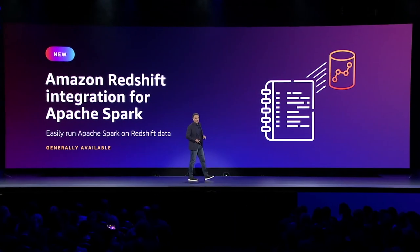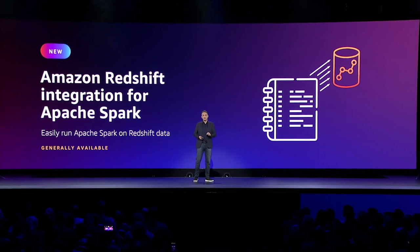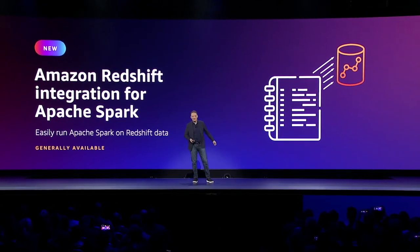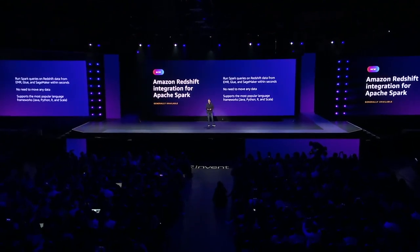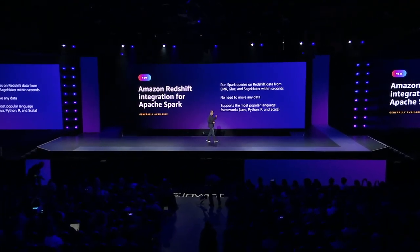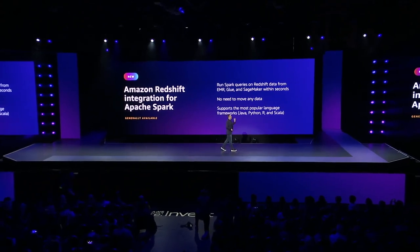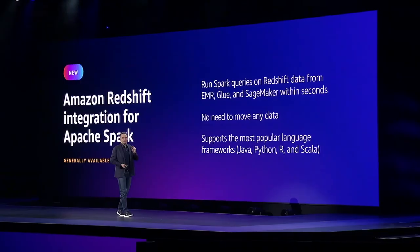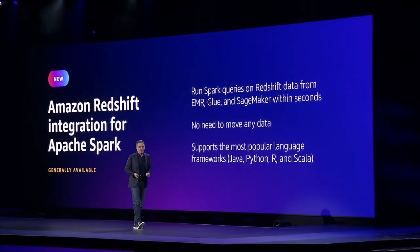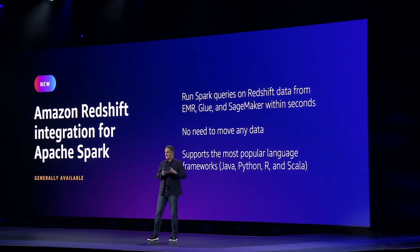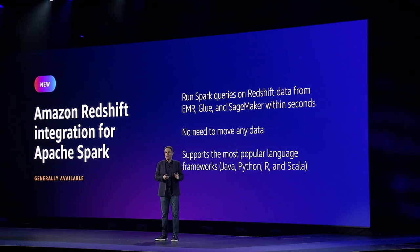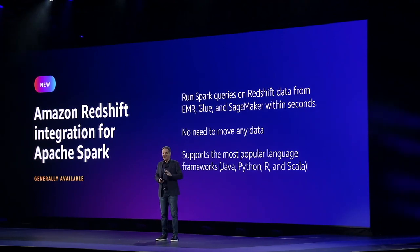I'm really excited to introduce Amazon Redshift integration for Apache Spark. It's now incredibly easy to run Apache Spark applications on Redshift data from AWS analytics services. You can use simple Spark jobs or Jupyter notebooks in AWS services like EMR, Glue, and SageMaker to connect to Redshift and run read-write queries against Redshift tables — no need to move any data or build and manage any connectors.